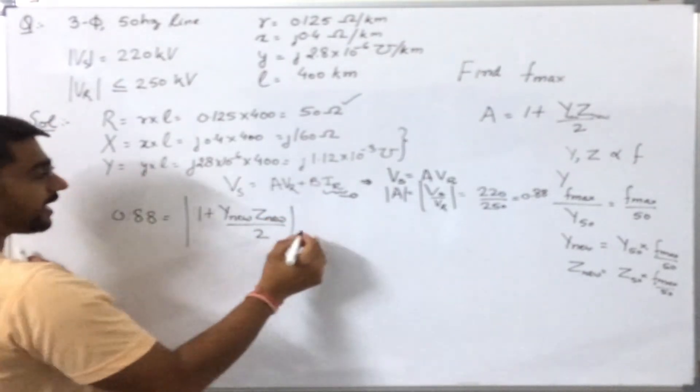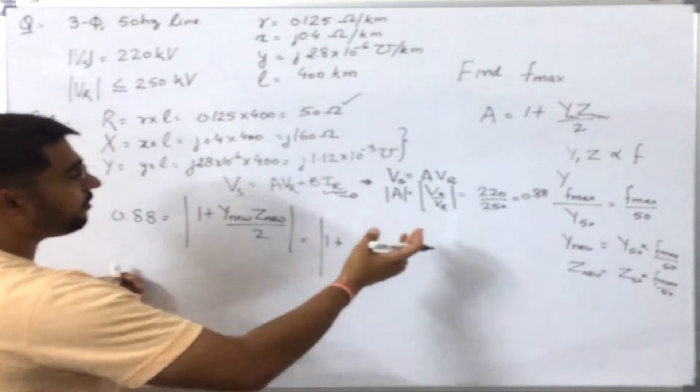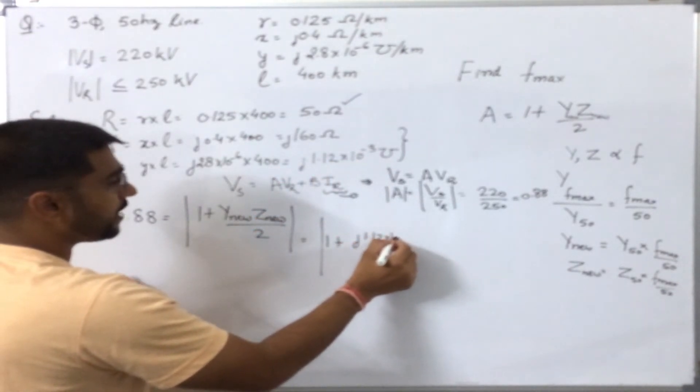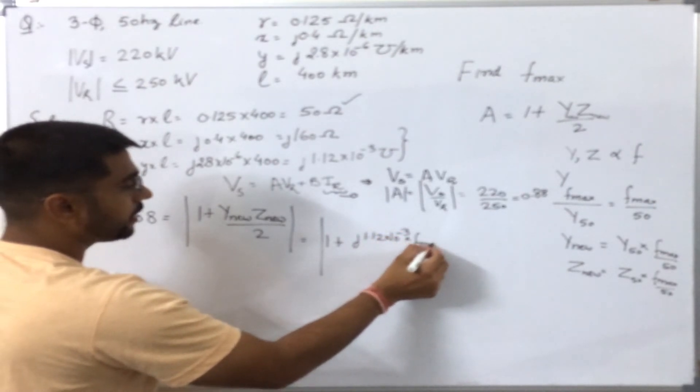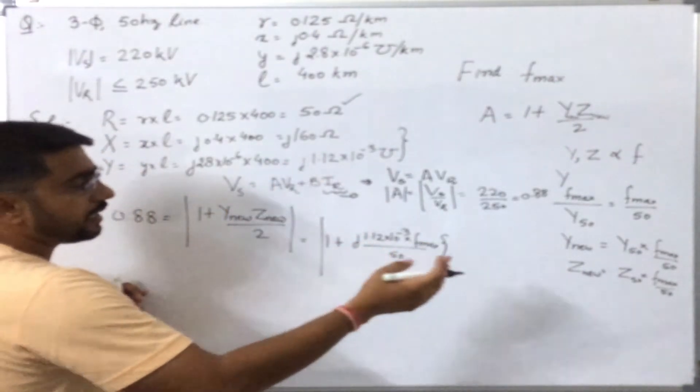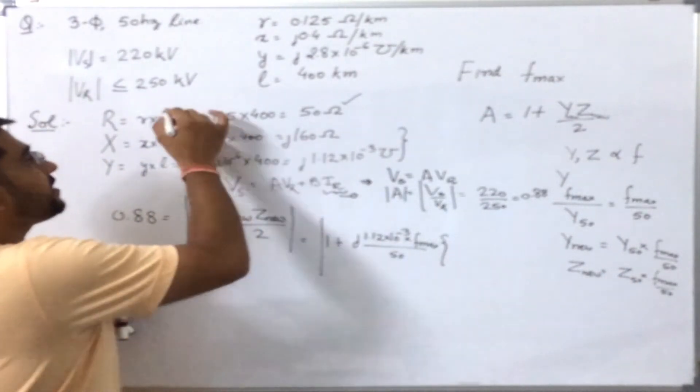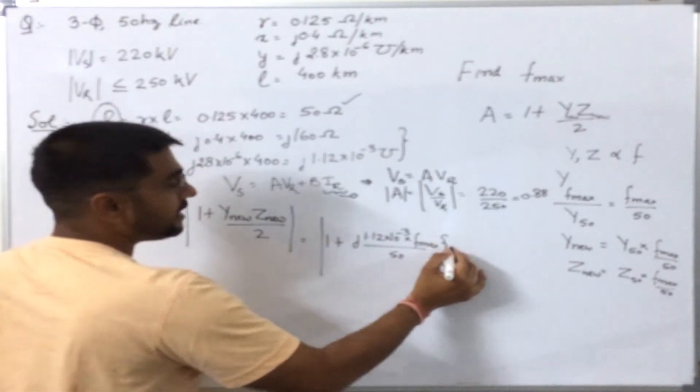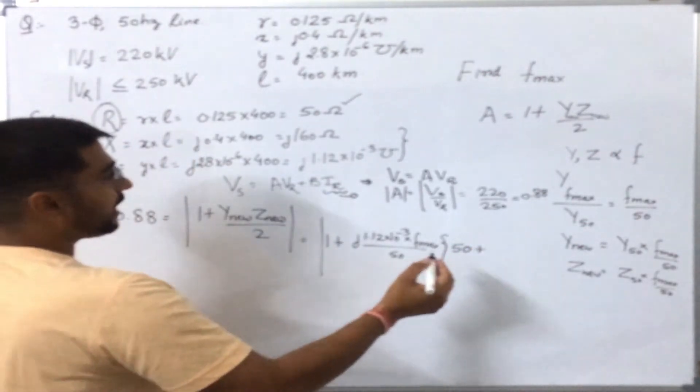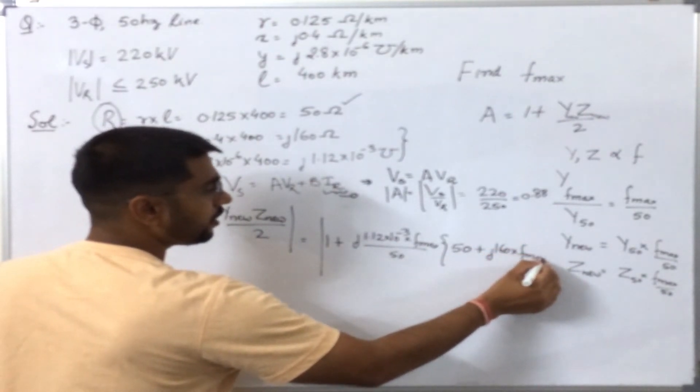I will get 0.88 should equal the magnitude of 1 plus Y_new times Z_new over 2. Putting these values, I will get 1 plus what is Y_new? Y_new is simply Y at 50, which was 1.12 times 10 to power minus 3 times f_max over 50. What will be Z_new? Z_new will be Z at 50 times f_max by 50. Now, in the impedance part, resistance will not depend upon frequency, so it will remain the same, and the reactance part will change and become j 160 times f_max over 50.